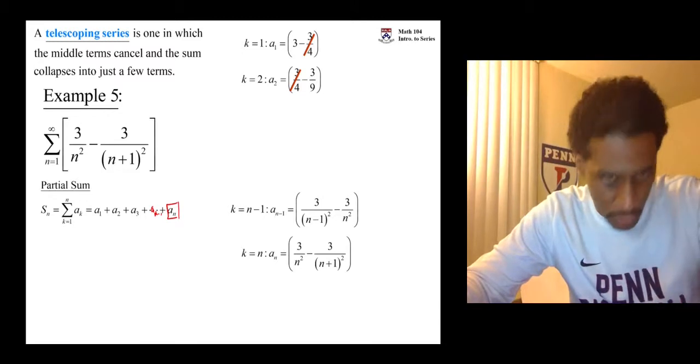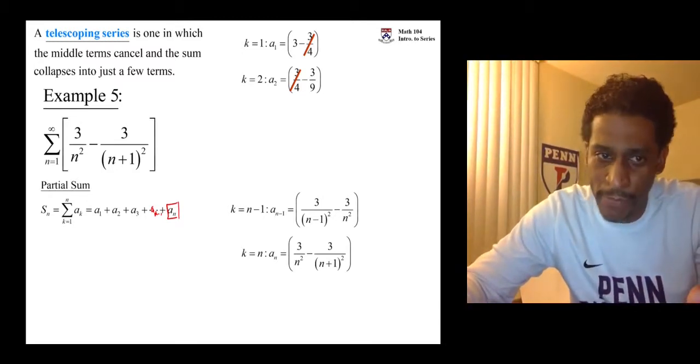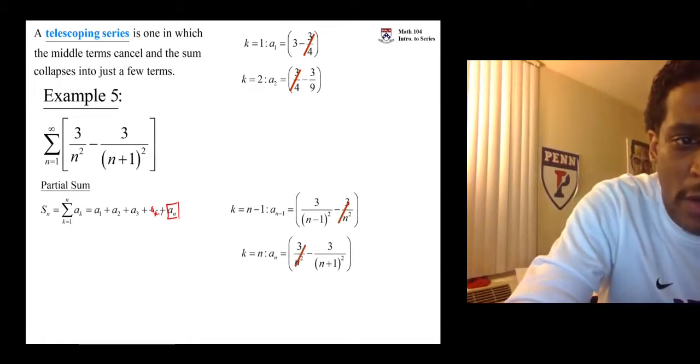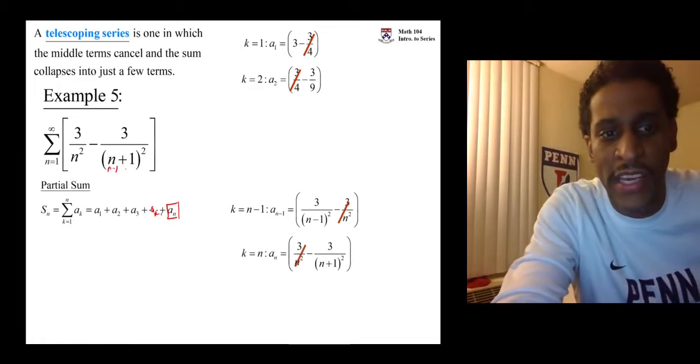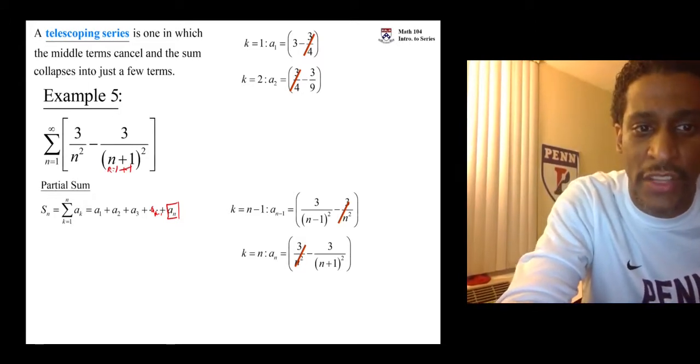So a sub n is just the actual terms that are in the summation. When you plug in n minus 1, for this term here, we have n minus 1, who then has a 1 added to it. And so those guys end up canceling each other out.